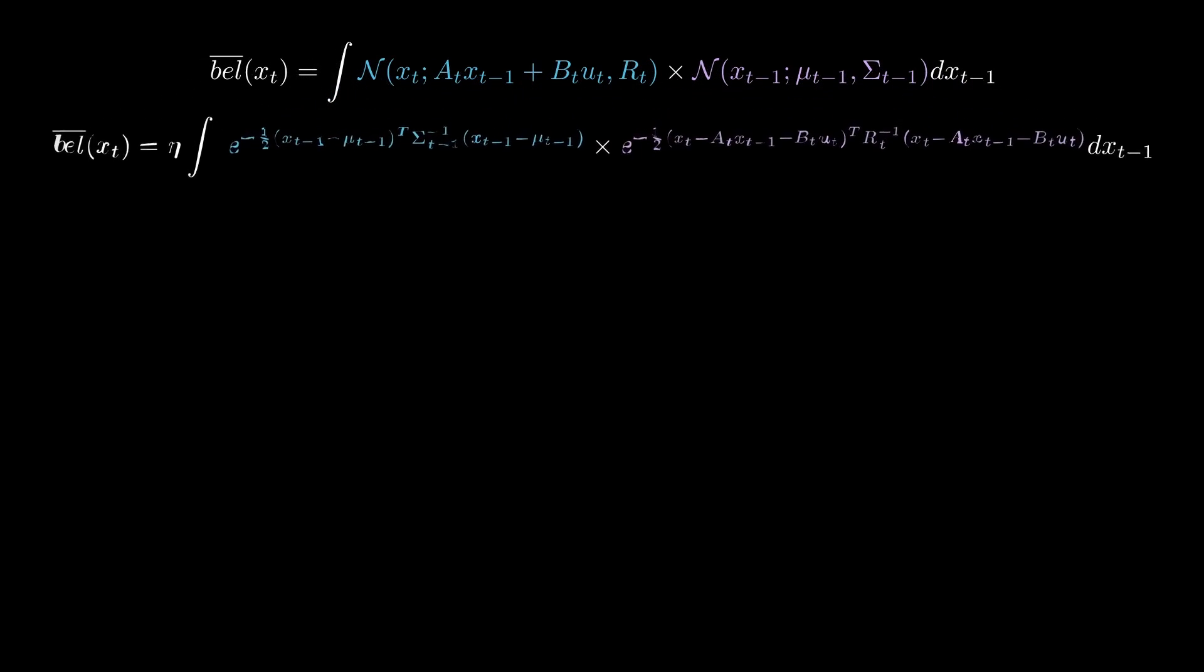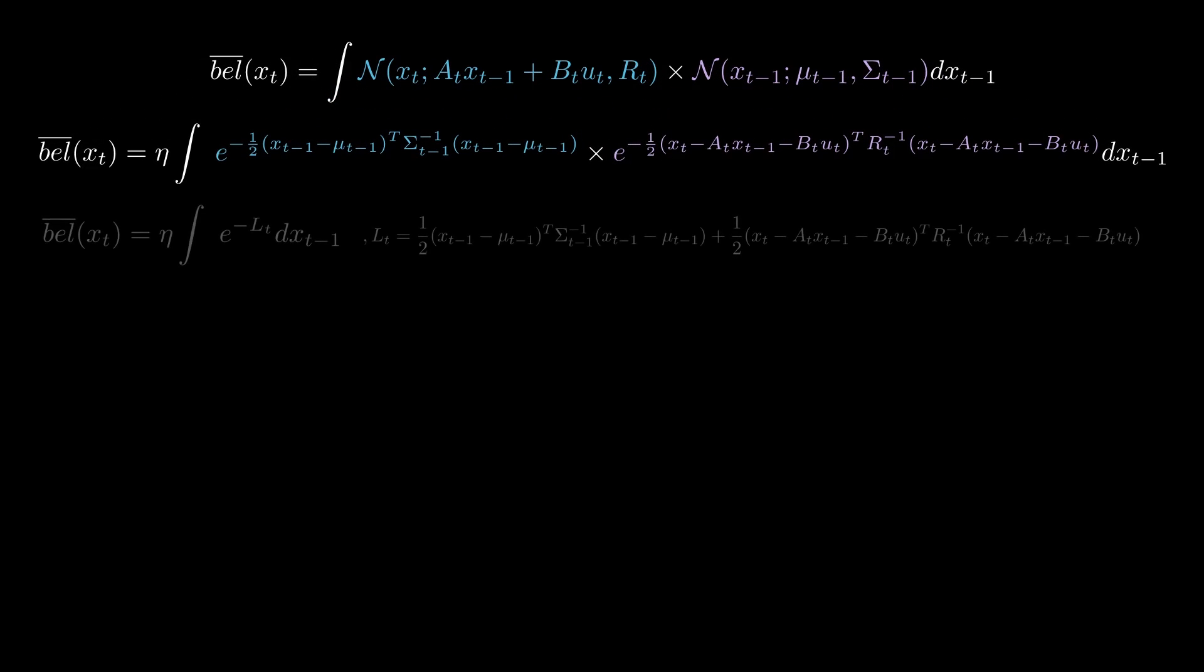First, let's expand out these normal distributions and combine them to form Lt as the exponents of the combined distribution. Note that any distribution where it is e to the power of f of x, where f of x is quadratic, is by definition a Gaussian distribution. Our goal is to find a decomposition Lt is equal to Lt of Xt plus Lt of Xt minus 1 and Xt.